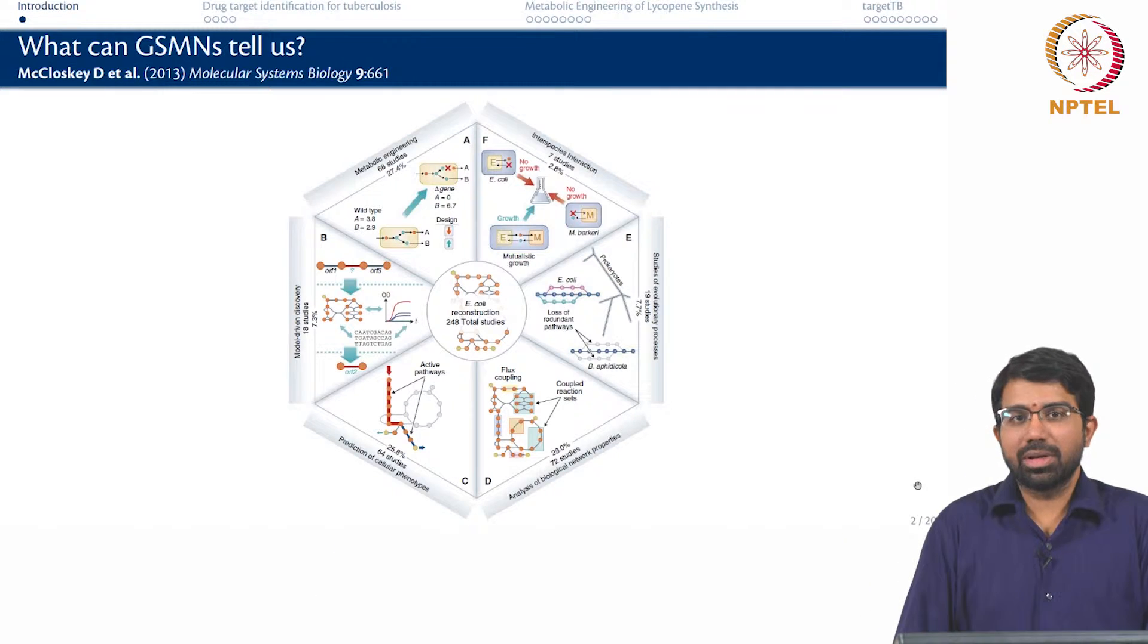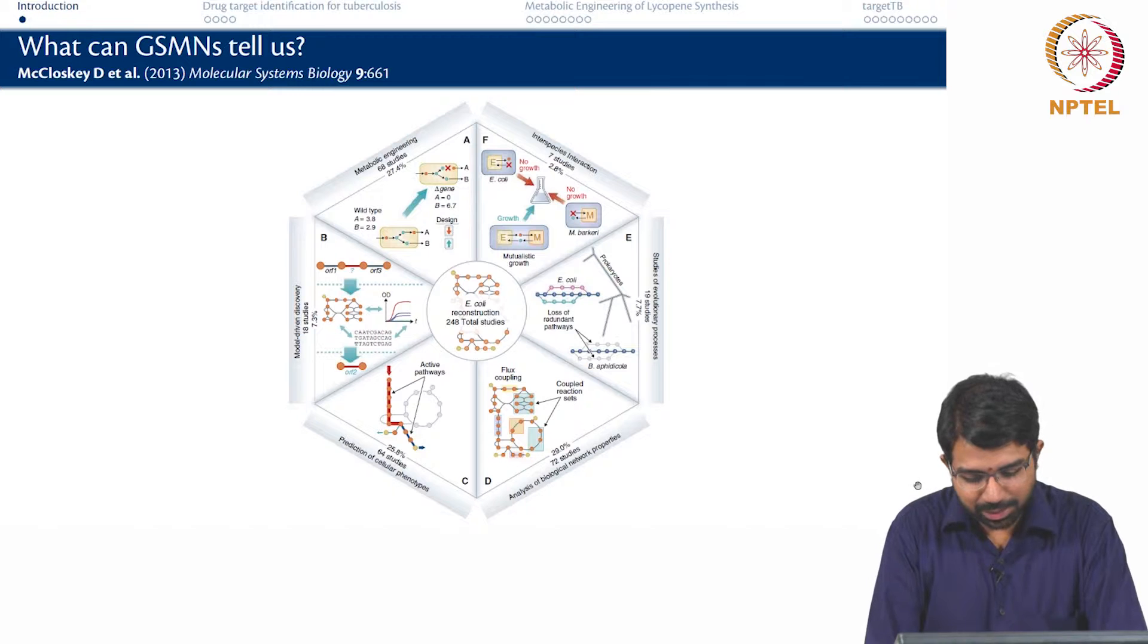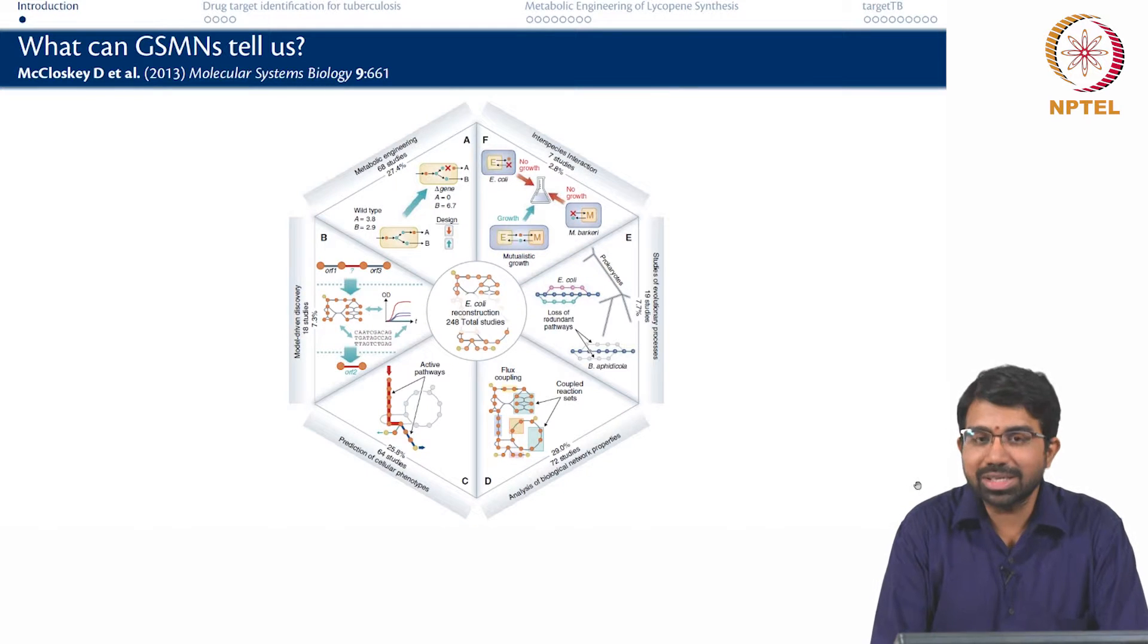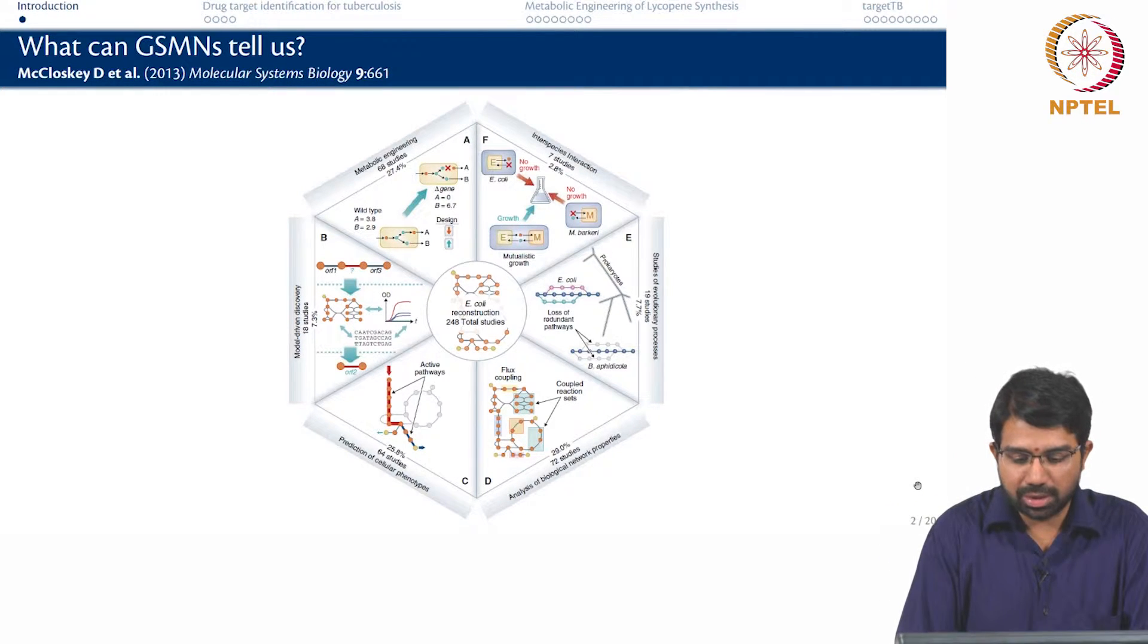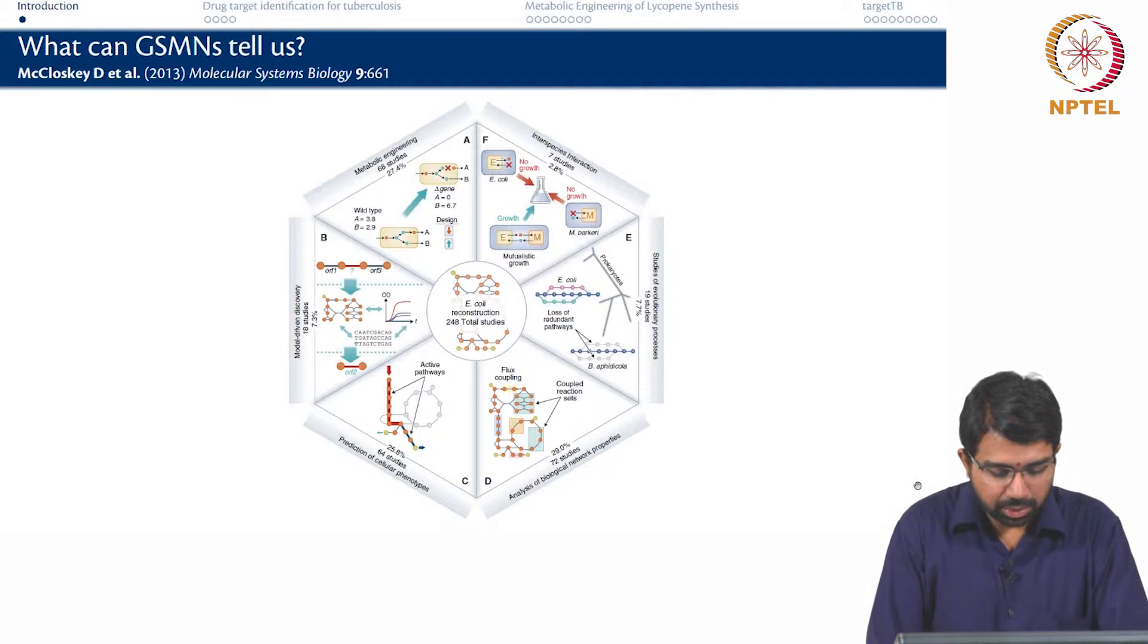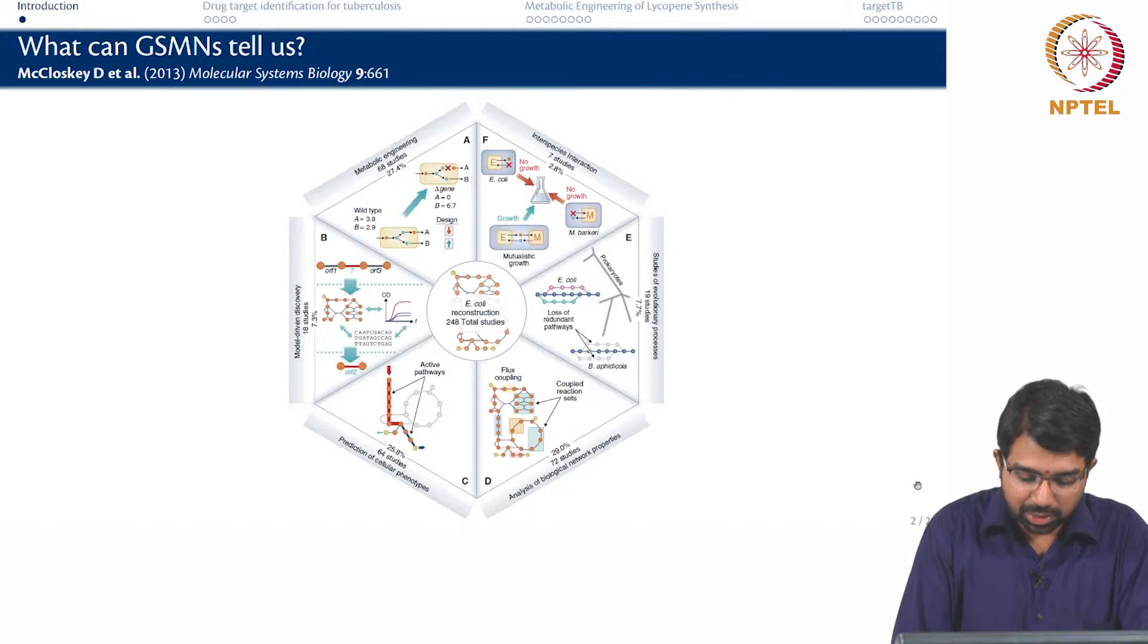So what can genome scale metabolic networks tell us? This is a nice picture which tells you the distribution of studies that are based only on the E. coli reconstruction. There is a popular reconstruction for E. coli known as the iAF1260. It accounts for 1260 ORFs, open reading frames in E. coli. It was published in 2012 or so. There are about 248 studies that use the E. coli reconstruction.